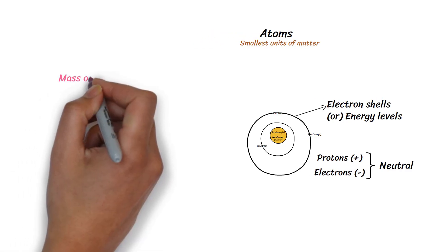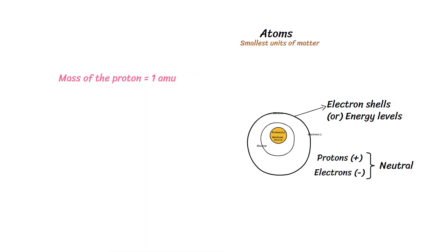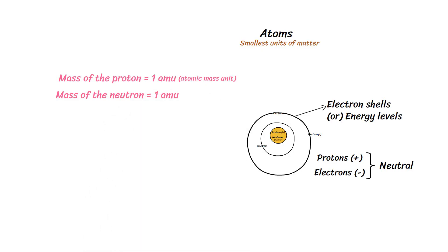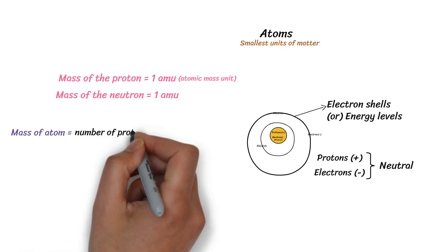The mass of the proton is equal to 1 amu, or atomic mass unit. The mass of the neutron is also equal to 1 amu. Therefore, the mass of an atom is equal to the number of protons and neutrons.